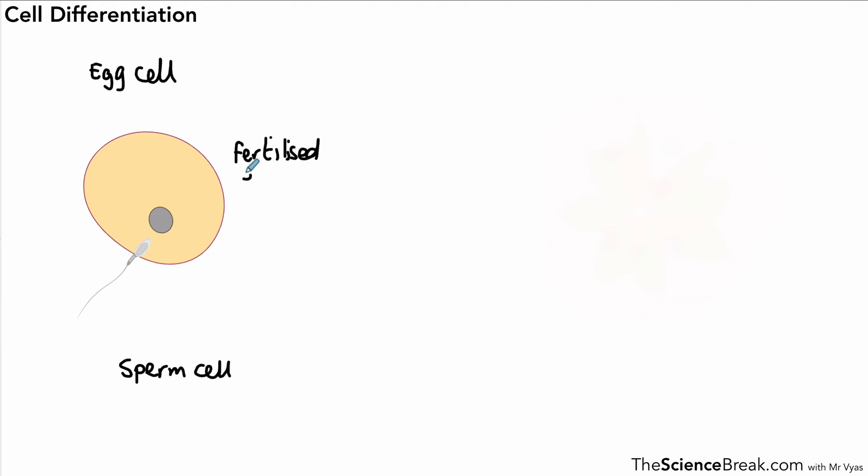That fertilized egg is the first cell in producing a new individual. Once the egg cell has been fertilized it will begin to divide. We'll get two cells, then four, then eight, and we end up with a ball of cells which are all very similar to each other.